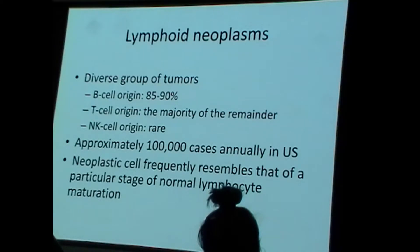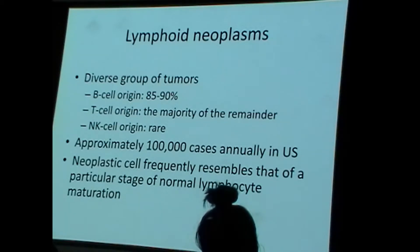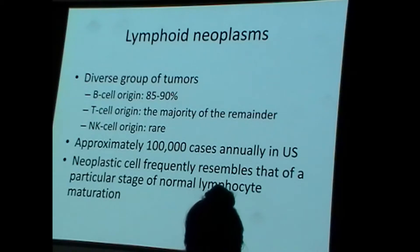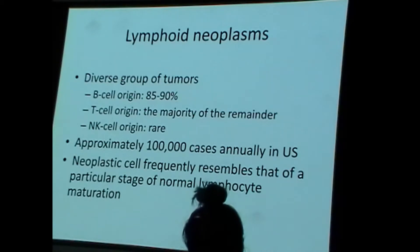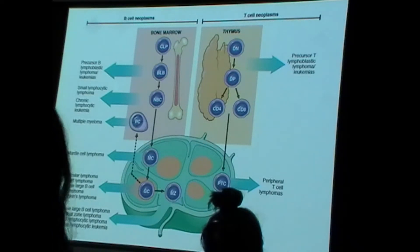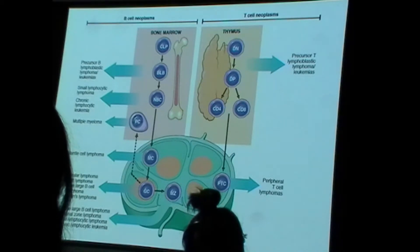We'll talk first about lymphoid neoplasms. Lymphoid neoplasms are usually B-cell neoplasms, and they are sometimes T-cell neoplasms. Very rarely they are NK-cell neoplasms. Just like B-cells and T-cells have a normal pathway of physiological development, many of the white blood cell cancers we'll learn about mimic some particular stage of lymphoid development.